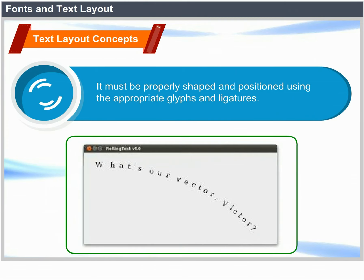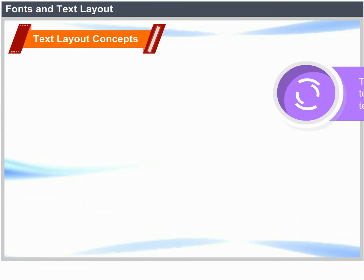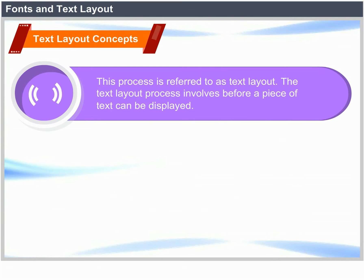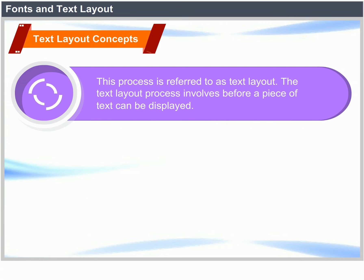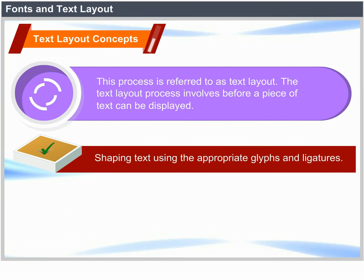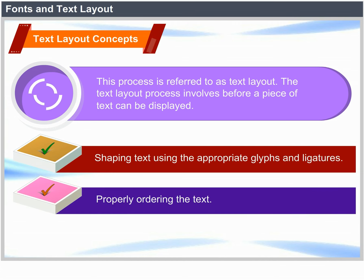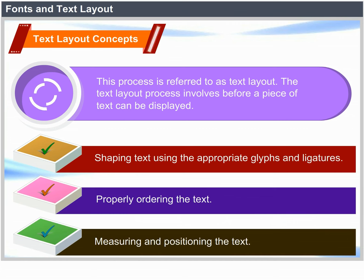Text layout concept: Before a piece of text can be displayed, it must be properly shaped and positioned using the appropriate glyphs and ligatures. This process is referred to as text layout. The text layout process involves: shaping text using the appropriate glyphs and ligatures, properly ordering the text, and measuring and positioning the text.